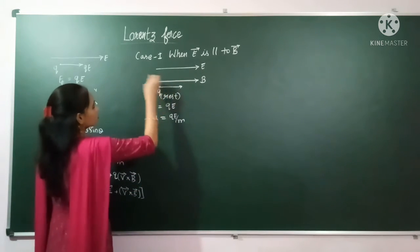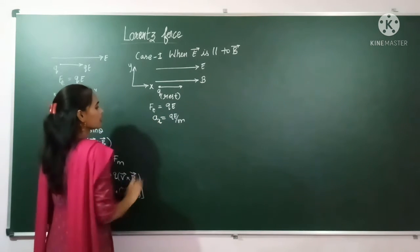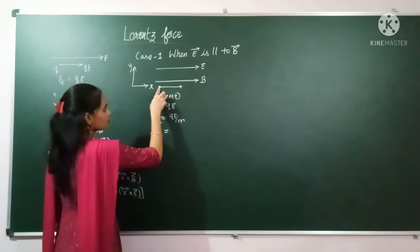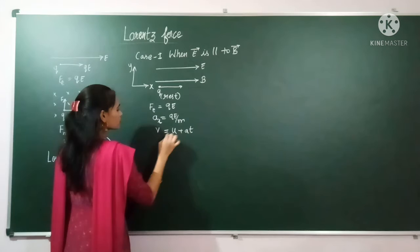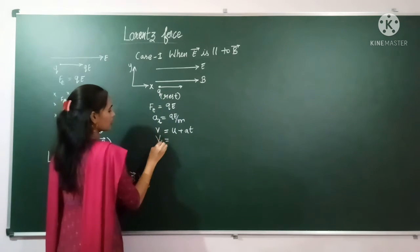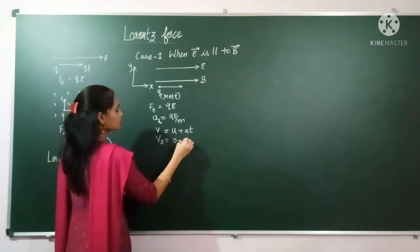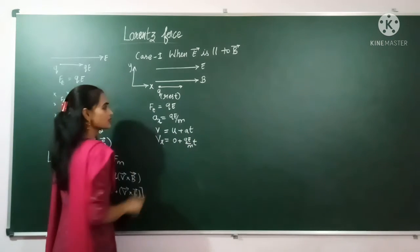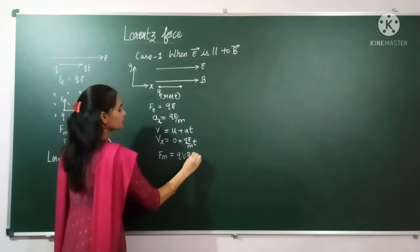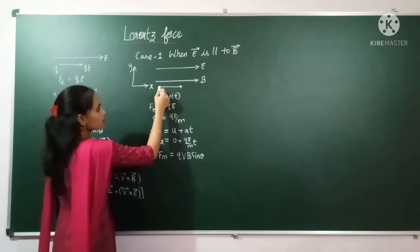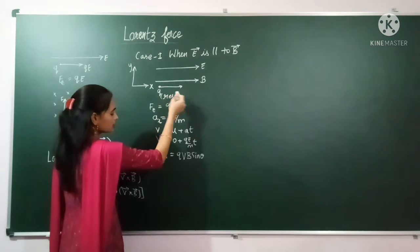If we consider this is the X direction and this is the Y direction, the charge will move in X. Velocity is given by v = u + at, with initial velocity u = 0 (charge is at rest), so velocity becomes v = (QE/M) × t. For the magnetic force, we have F = QVB sin θ; but here the initial velocity is 0, so magnetic force becomes 0.